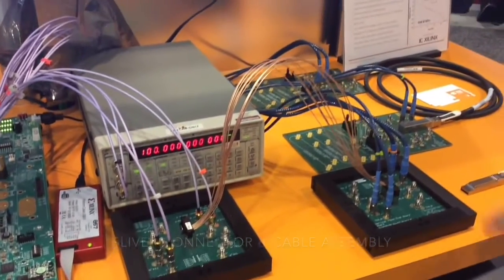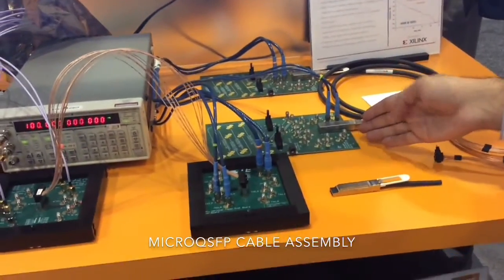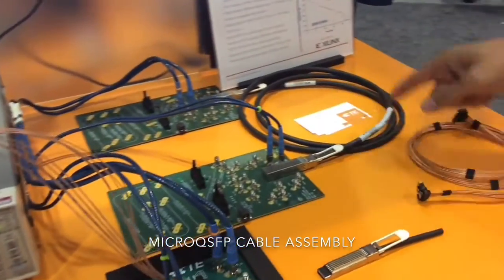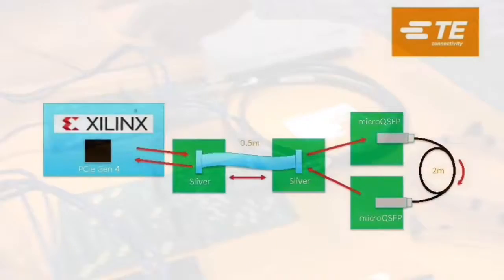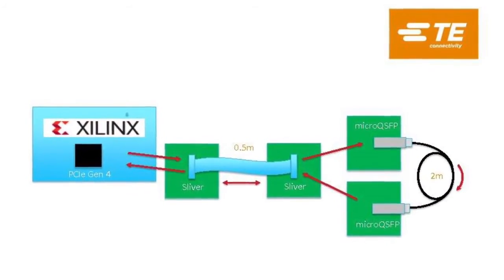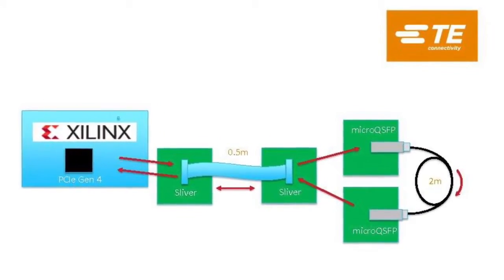At that point, it jumps into a different cable assembly, which is our micro-QSFP cable assembly, going two meters and back out and across and back. So it's a complete full circle all the way back.